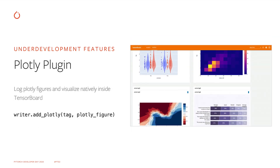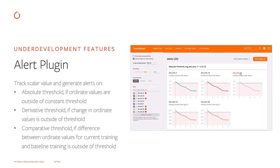The Plotly plugin will enable us to visualize Plotly figures natively in TensorBoard, offering a much better and more interactive user experience compared with converting them to images and logging through the Image API. The alert plugin allows us to monitor certain model metrics across training and get alerts automatically when they go above or below certain thresholds — these thresholds can be either absolute, derivative, or comparative.